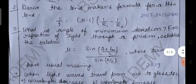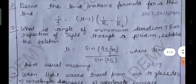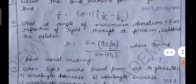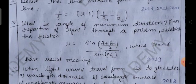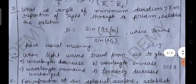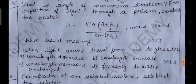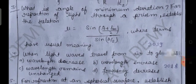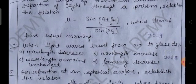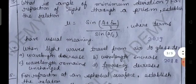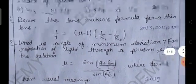The next problem: What is angle of minimum deviation? This is also a most important question in the JAC Board for refraction of light through a prism. Establish the relation μ = sin(A+δm/2) / sin(A/2), where terms have their usual meanings. μ is the refractive index, δm is the deviation produced, and A is the angle of prism. Please practice these two problems more and more times. This is from 2019.